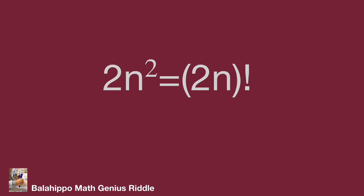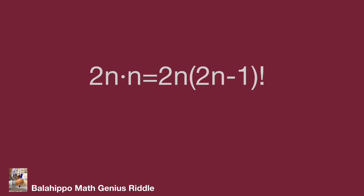Furthermore, in this video we share our idea to prove n equals 1 is the result and check whether there is any other value for n. The first idea is to adjust the equations: 2n squared equals 2 times n times n, and (2n) factorial equals 2n times (2n minus 1) factorial.